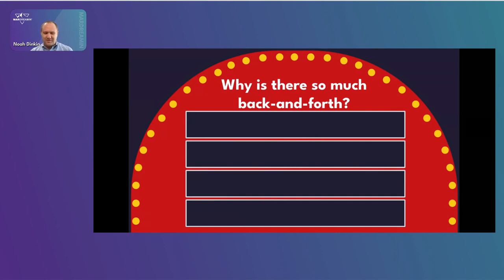So why is there so much back and forth? Let's play a little Family Feud-style game here. Feel free to write in the chat. We're hearing: too many people, priorities, siloed tools — that's a great one — unclear rules, unclear strategy. You can think about that as the process isn't well defined. Let's look at what we've heard and what folks in the chat are contributing.